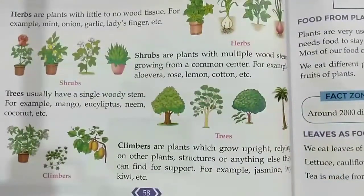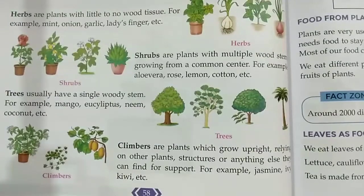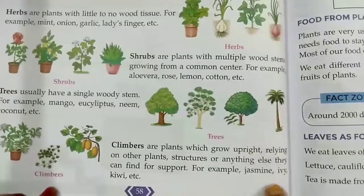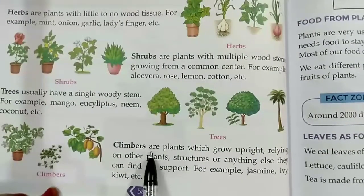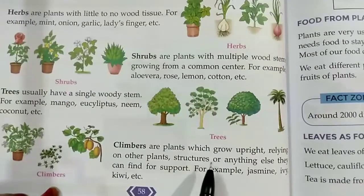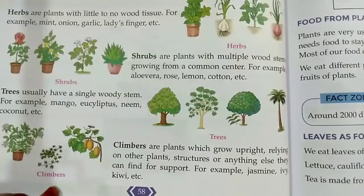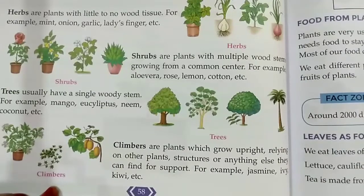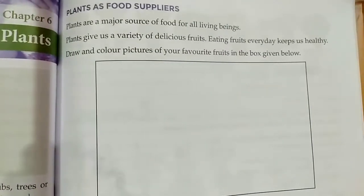Now, climbers — they can't stand straight on their own; they need a support to grow upright. Climbers are plants which grow upright by relying on other plants or a support structure. They may also have small tentacles to grip. For example, jasmine, ivy, and kiwi are climbers.